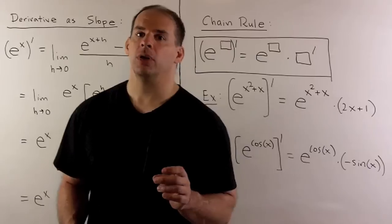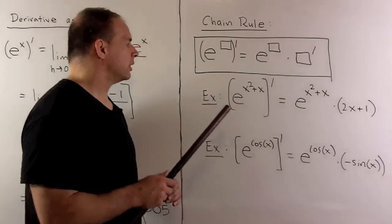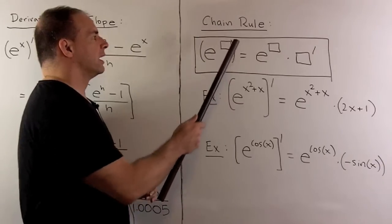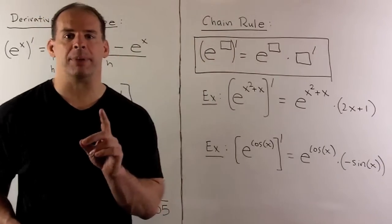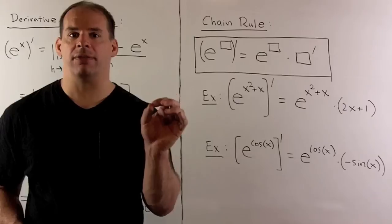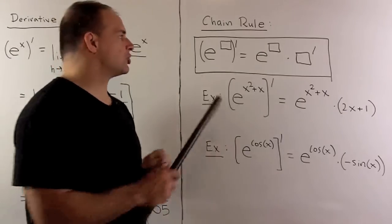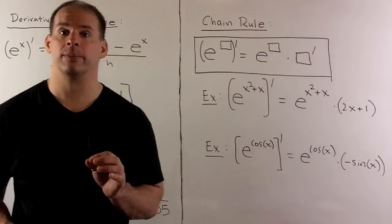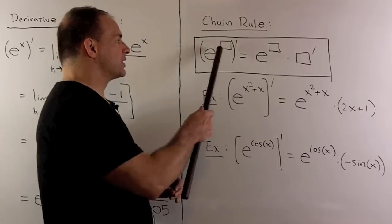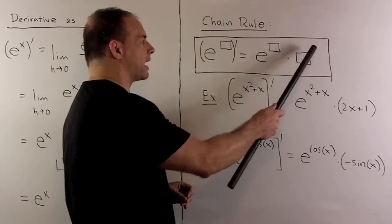Finally, we have the chain rule with the exponential function. So, if I have e to the box, where box is some function of x, take the derivative, what happens? Well, the derivative of e to the x with respect to x is just itself. So, our first step here is just to return e to the box. You do nothing. Then, we have to multiply by the derivative of the inside. So, the inside function here is box, so I get a box prime.